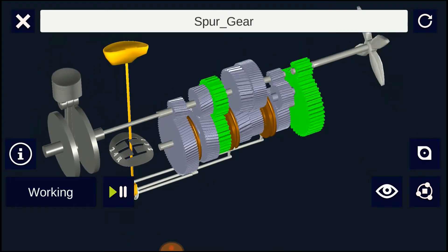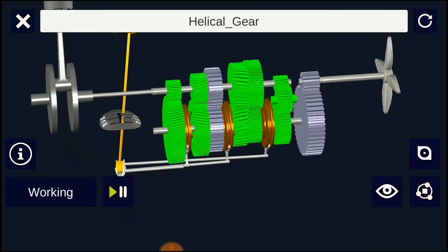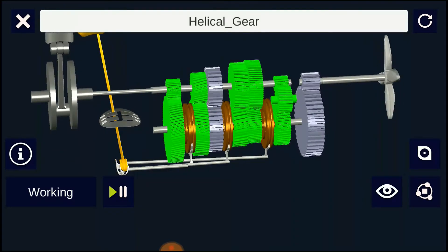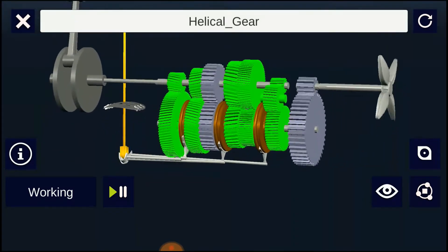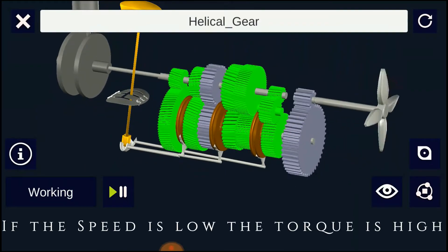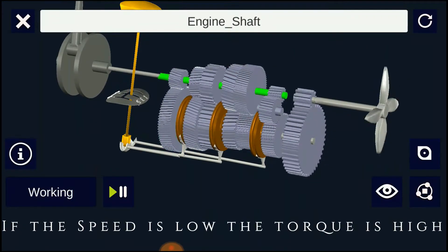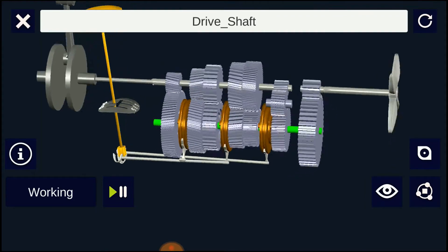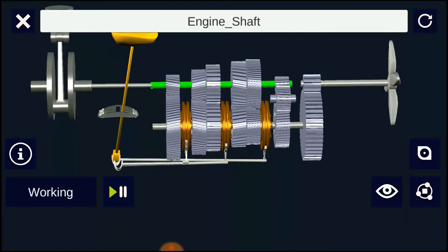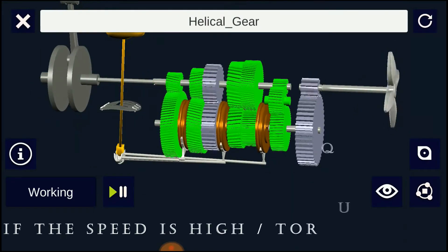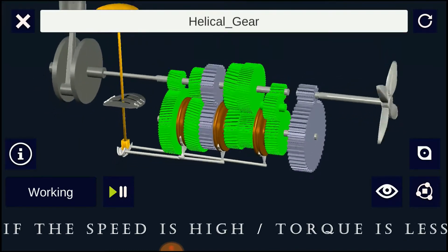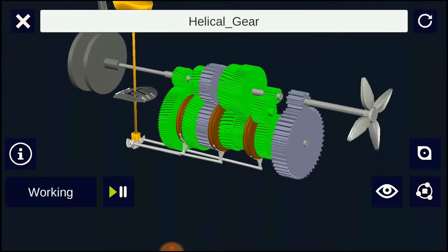If gear ratio is larger than one, the main shaft revolves at lower speed than the counter shaft and the torque of the main shaft is higher than the counter shaft. On other hand, if the gear ratio is less than one, then the main shaft revolves at higher speed than the counter shaft and the torque of the main shaft is lower than the counter shaft.